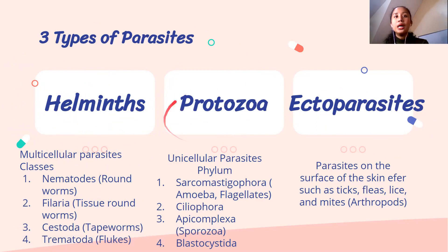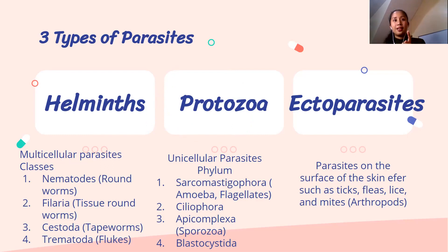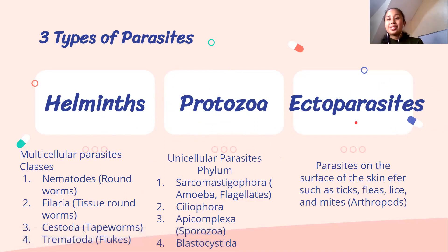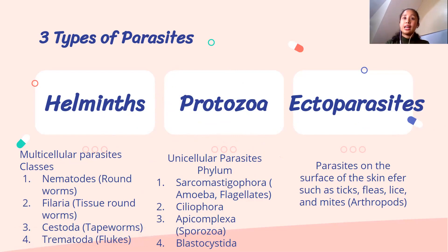Protozoa are your unicellular parasites — they are only one cell, like amoeba. We have different parasites under protozoa. And we have ectoparasites — 'ecto' means on the surface. These are parasites that thrive only on the surface of the skin. Examples include ticks, fleas, lice, mites, pubic lice — arthropods.